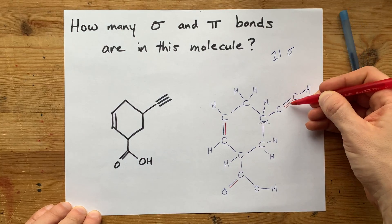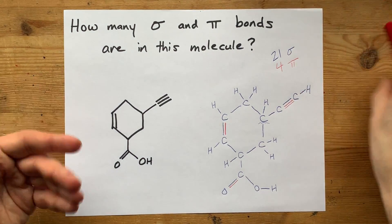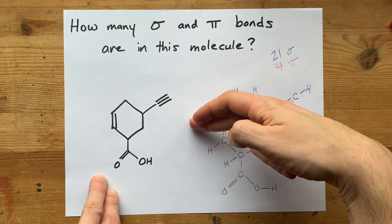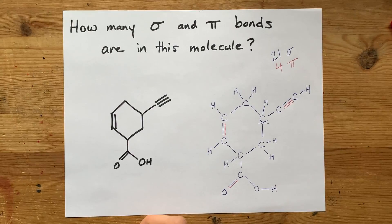one, two, three, four pi bonds. You would never guess twenty-one sigma bonds from this molecule unless you were to outfit it with the hydrogens that were required right off the bat.